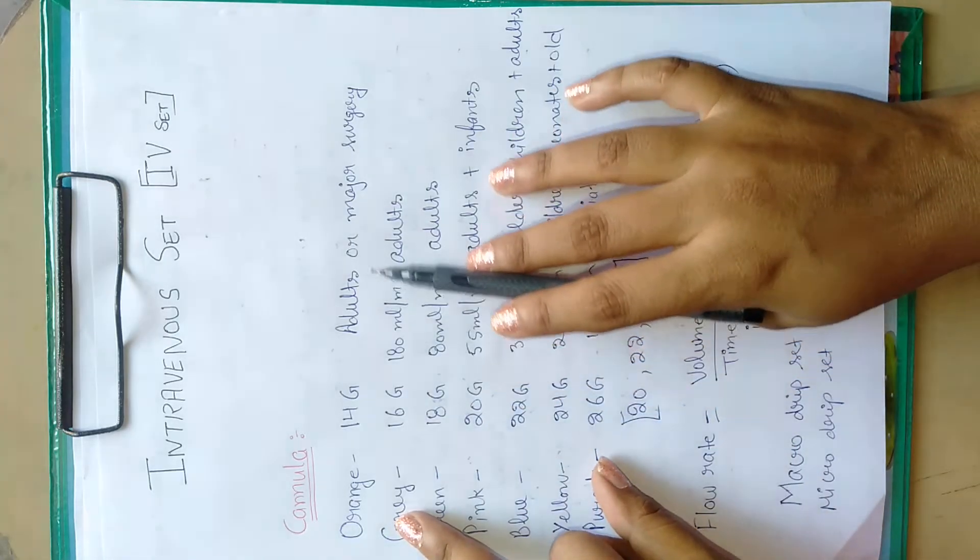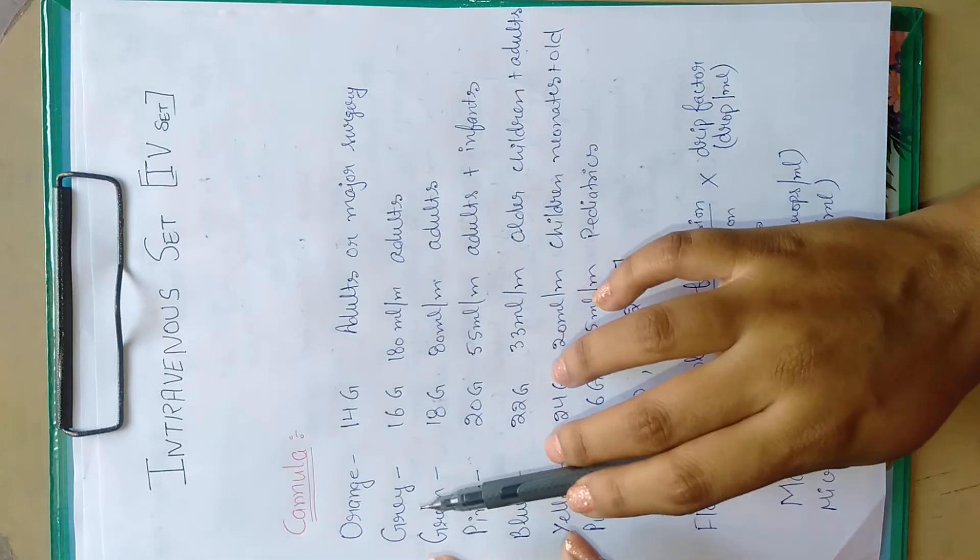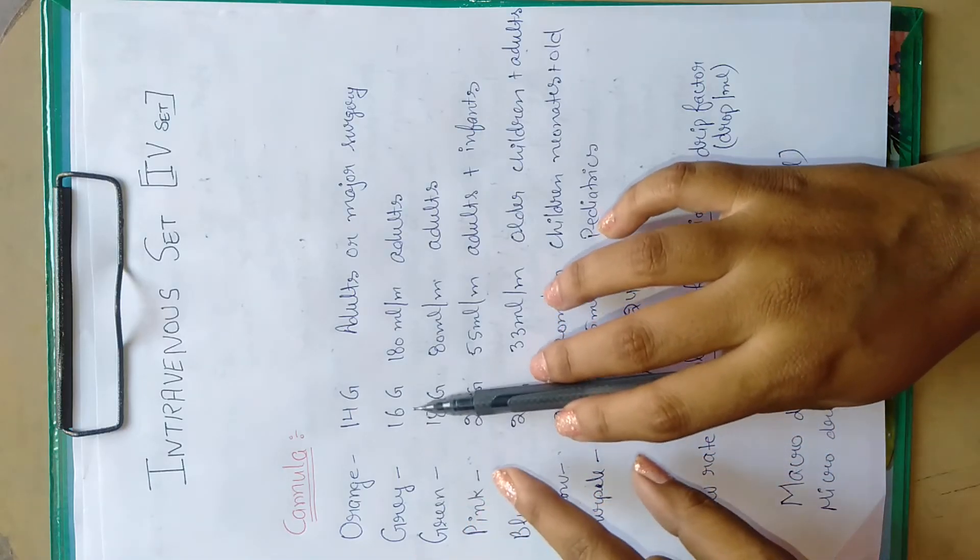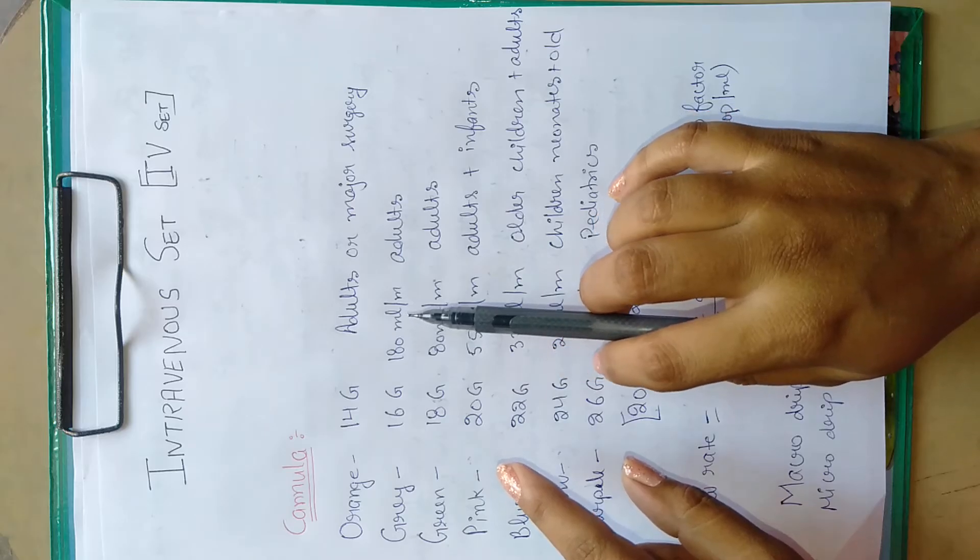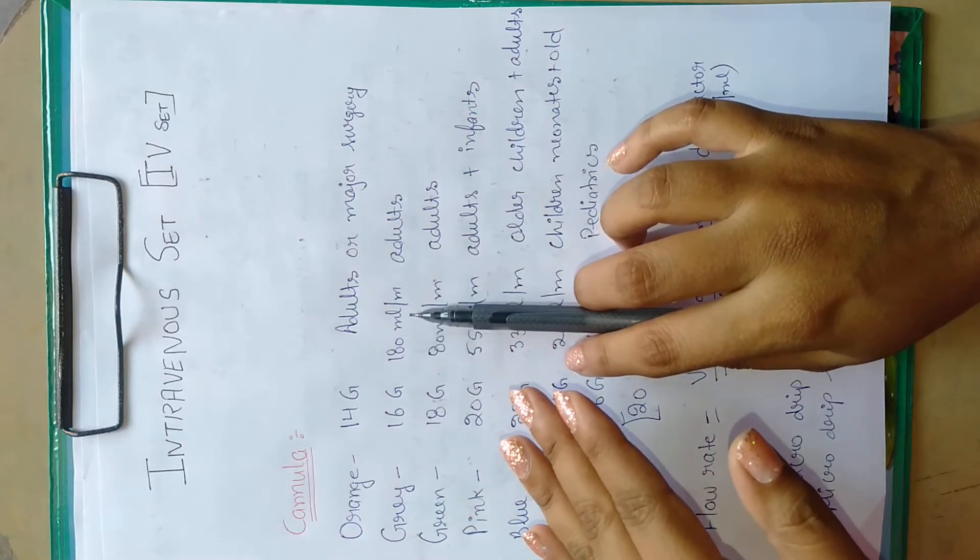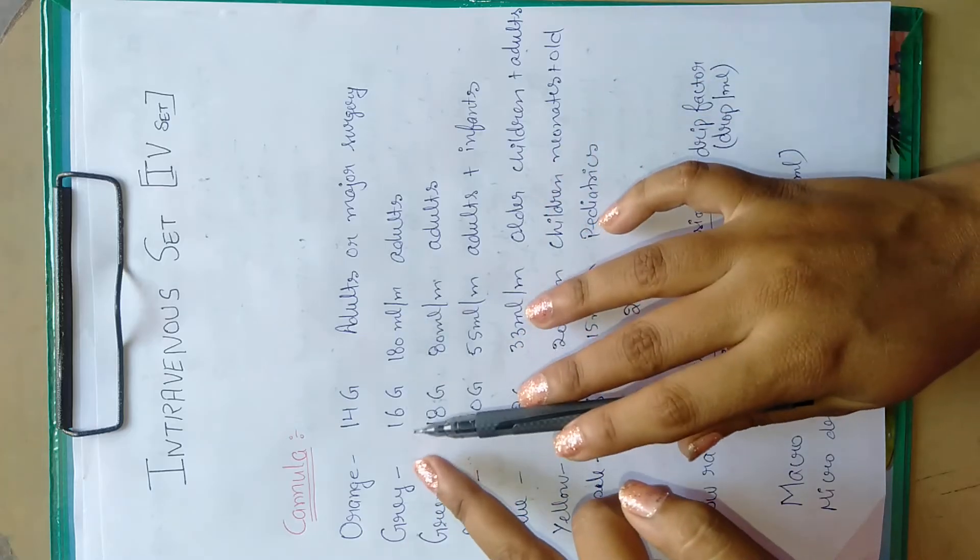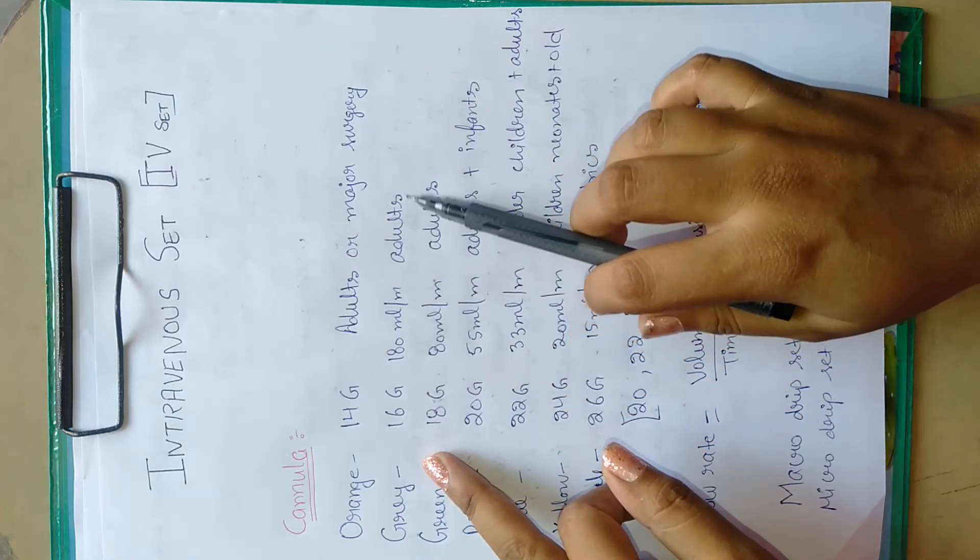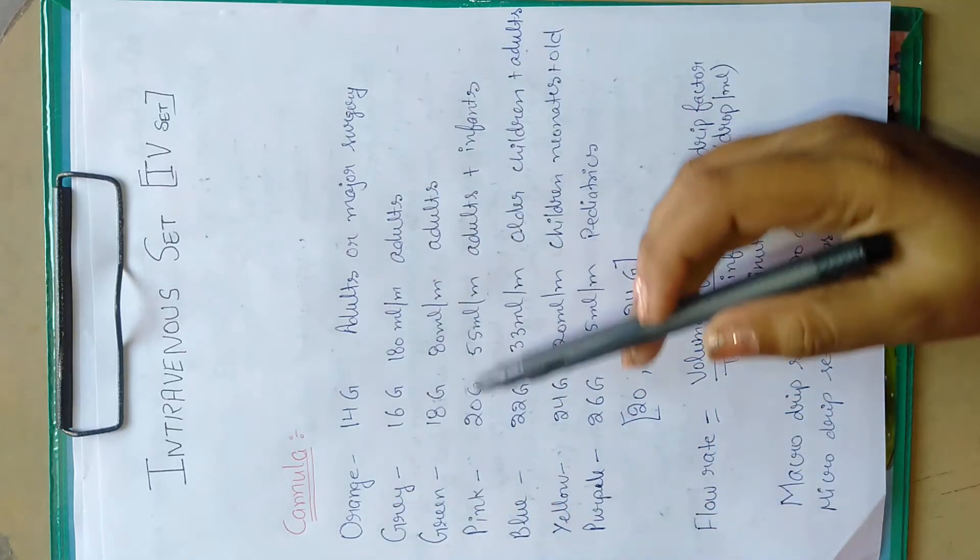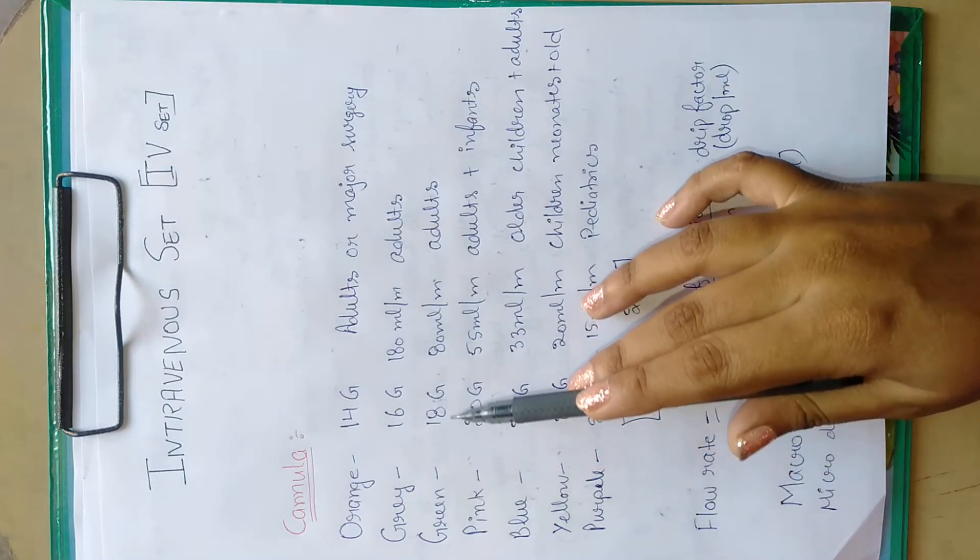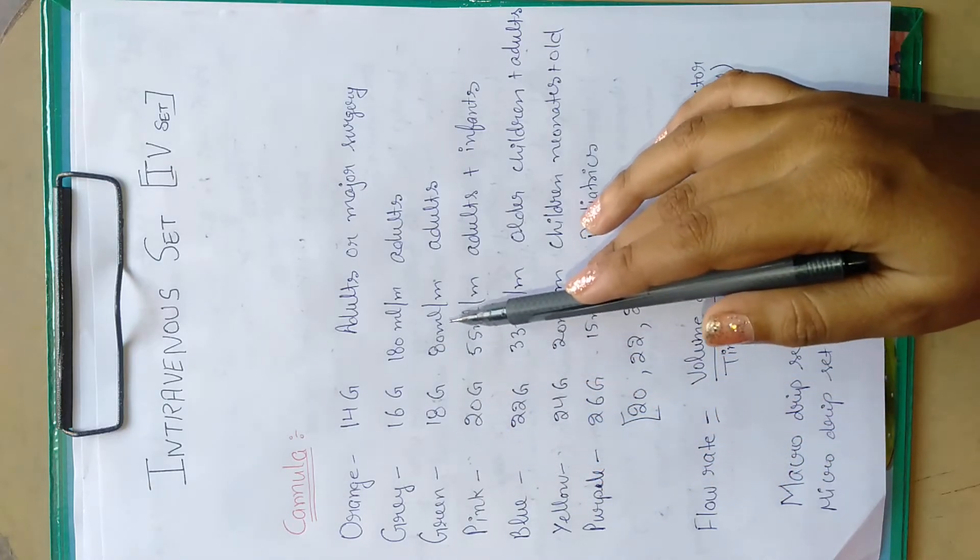Next one is gray colored cannula of 16 gauge with 180 ml per minute fluid flow rate, used for adults. And green colored cannula of 18 gauge with flow rate of 80 ml per minute is used for adults.